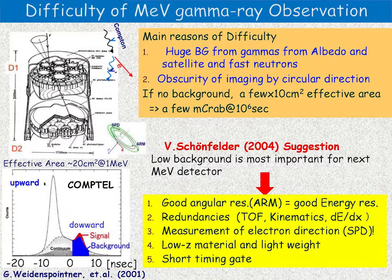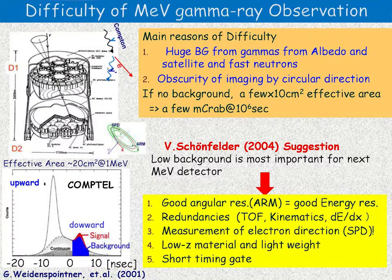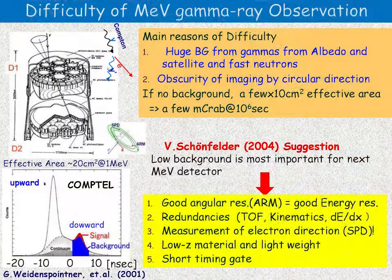Professor Schoenfelder suggested that low background is the most important requirement for the next MeV detector. Concretely, he suggested good angular resolution — which also means good energy resolution — and redundancy, like time-of-flight. For example, kinematics using energy loss rate is my proposal. Also, measurement of electron direction is important because we then obtain a point direction rather than a circle. Low material and light weight in the satellite are also important to reduce background.